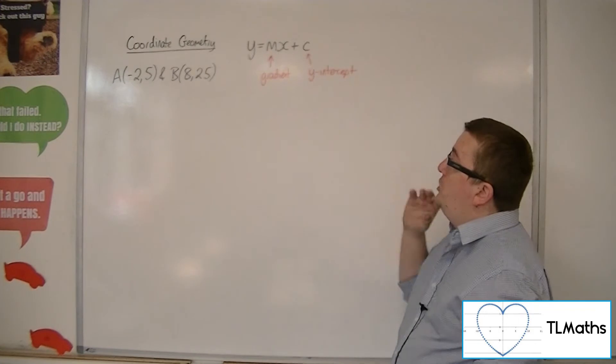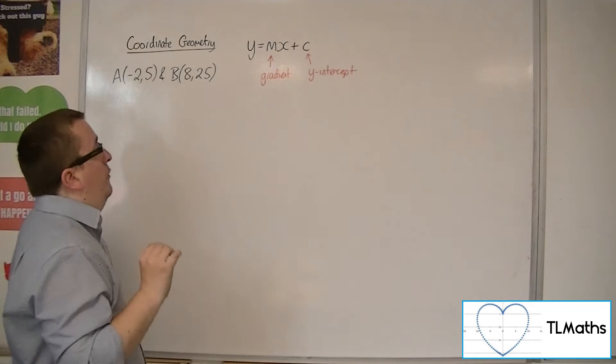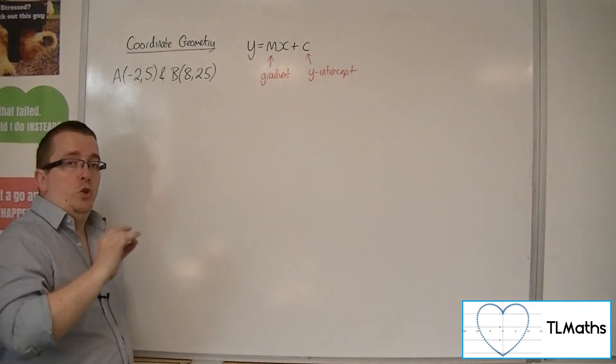But we need to find these two pieces individually, and we start off by finding the gradient of the line joining these two points.